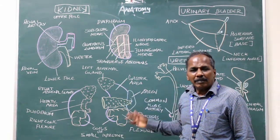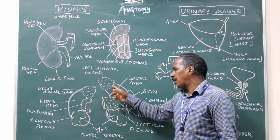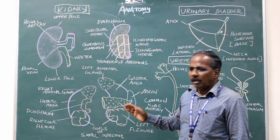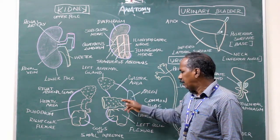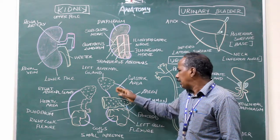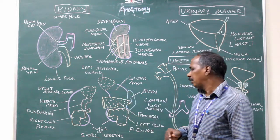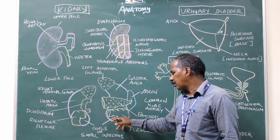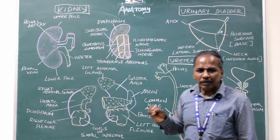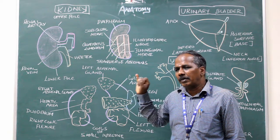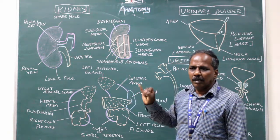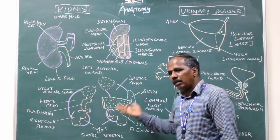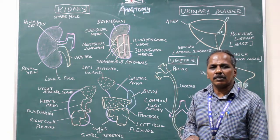Anterior relations of the left kidney. Number one, left suprarenal gland near the upper pole. Number two, stomach — the gastric area between the pancreas and the suprarenal gland is related to the stomach. Number three, pancreas at the middle of the kidney. Number four, spleen. Number five, left colic flexure or splenic flexure. Number six, coils of small intestine near the lower part.